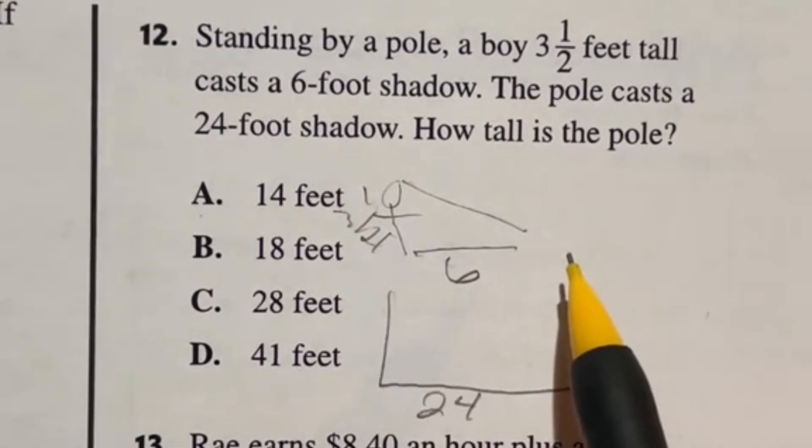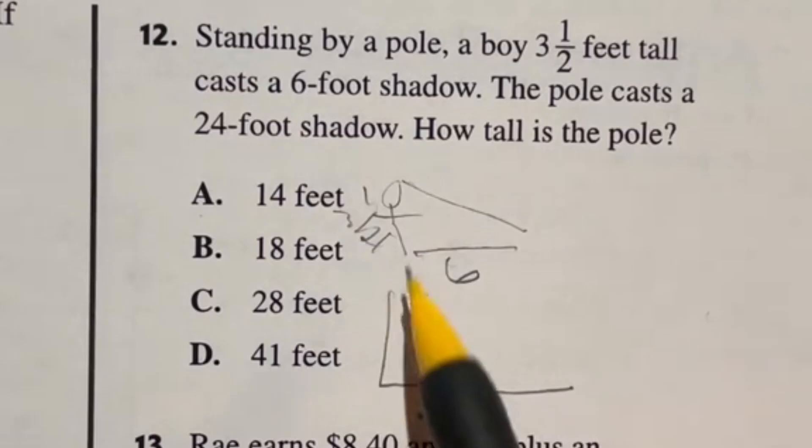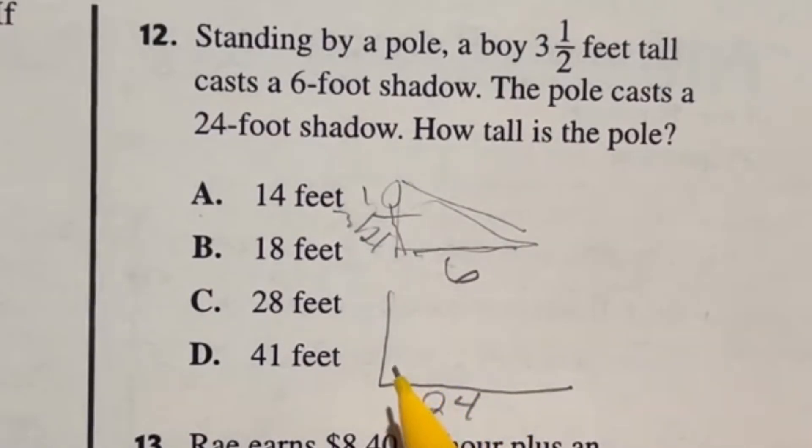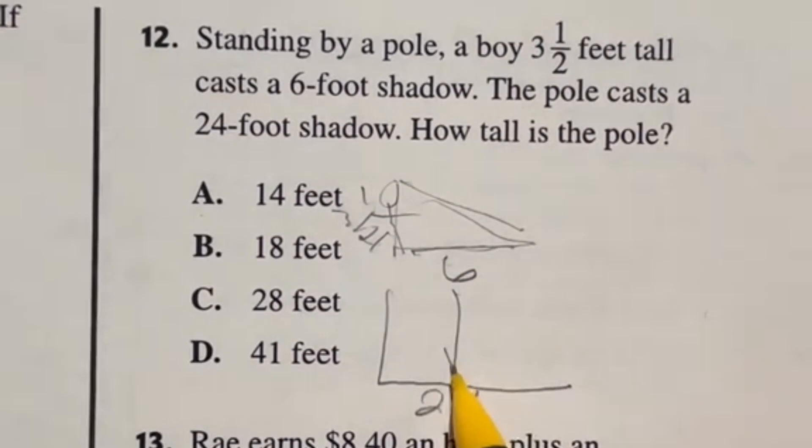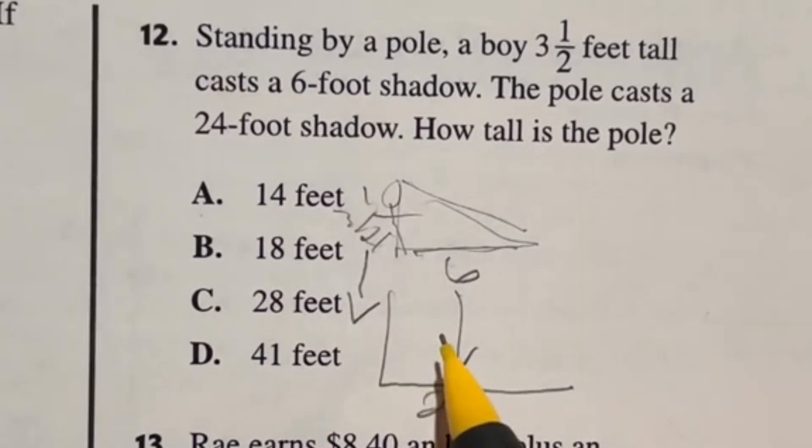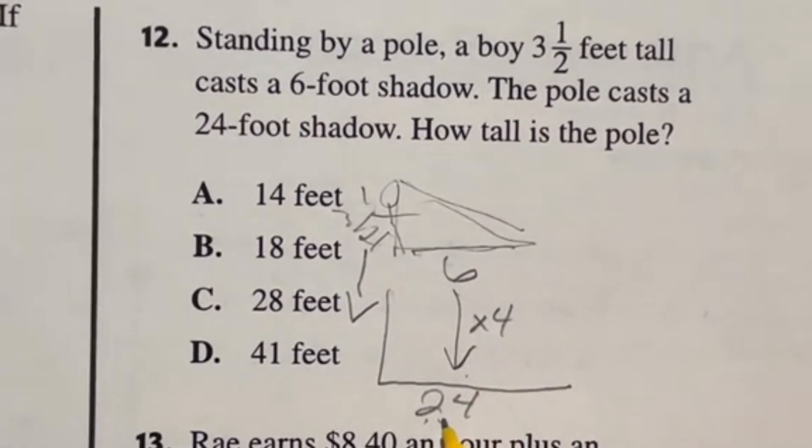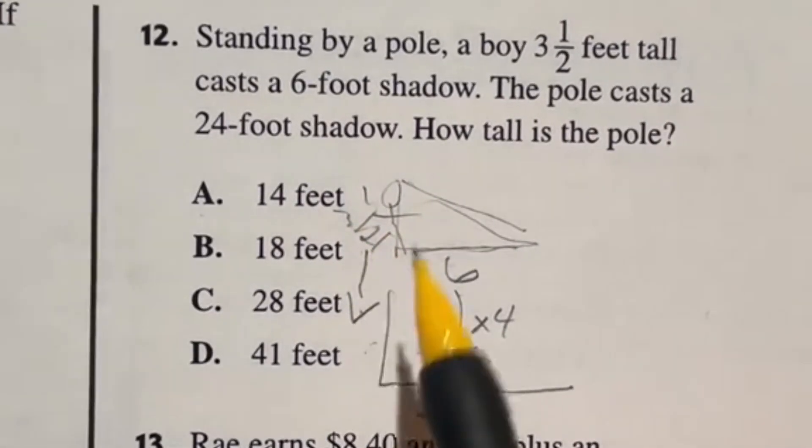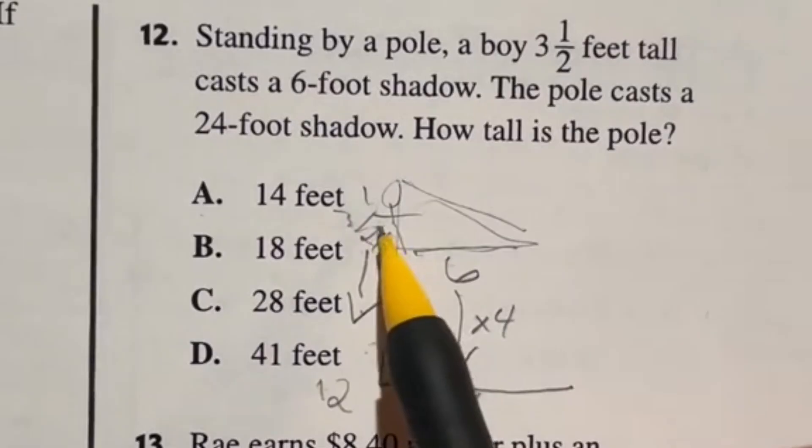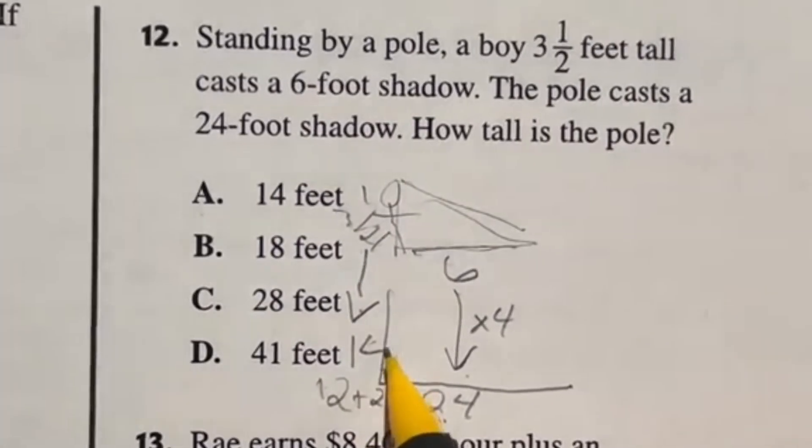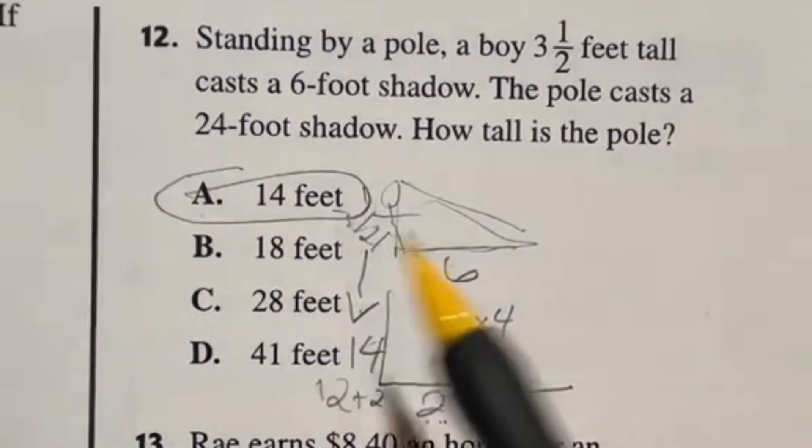Now here's the deal because the sun's coming in at the same angle. They're assuming that these are similar triangles, meaning that the ratios will stay the same. So whatever the ratio from six to 24 is should be the ratio of this three and a half to whatever this is. Well, if I do six times four, that's what's going to give me this 24. So to get this answer, I need to do three and a half times four. Well, three times four is 12. A half times four is two. So 12 plus that two is going to give me a final answer of 14 feet. So we're looking at answer A.